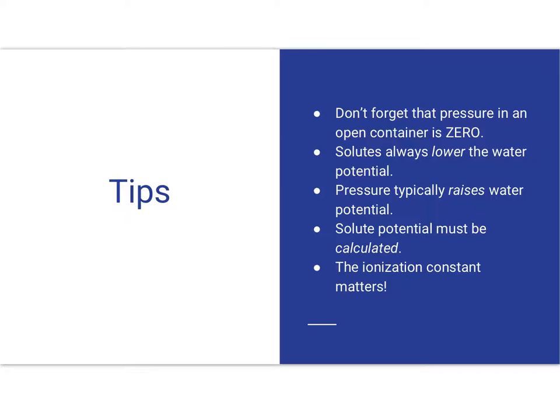So there's a lot there. This is a big video. And I do apologize for the length. But some tips. Just remember, don't forget that pressure in an open container is zero. Pressure comes from the water pressure entering the cell and pushing on that cell wall. Solutes always lower the water potential. Pressure typically raises the water potential in an open system. Solute potential has to be calculated. And we just looked at the equation for that. This is psi equals negative iCRT. And then ionization constant matters. So do not forget about i right there. This is very important. Pay close attention to what kind of substance you have dissolved in your water. Thanks for watching. If you have questions, please feel free to leave a comment below. Or if you're in my class, you can shoot me an email or send me something on Canvas. Thank you again for watching.